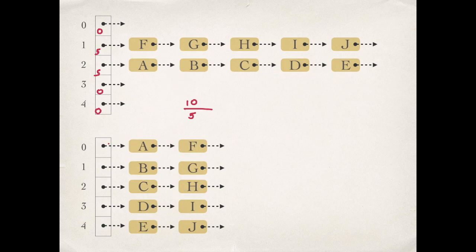The load of each bucket is 2 as there are two keys in each bucket. The average is the sum of these values, that is 10, which is again the total number of elements in the hash table divided by the size of the hash table, that is 5.